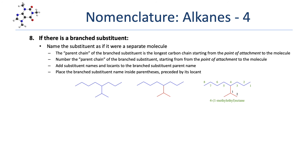Place the branched substituent name in parentheses to separate the two numbering systems. The full name becomes 4-(1-methylethyl)octane. Some branched substituents have simpler common names — this particular group is commonly called an isopropyl group, as it's an isomer of a propyl group. However, only a very small subset of branched substituents have common names, so focus on the systematic IUPAC naming process, which works for any branched substituent.